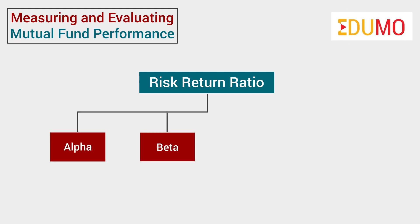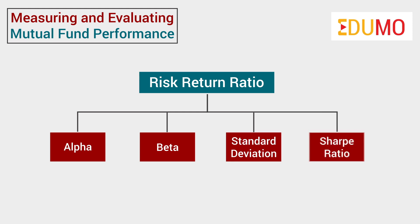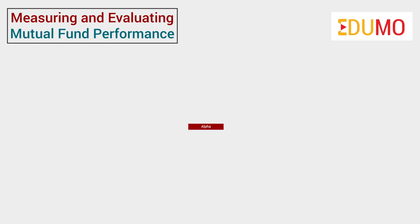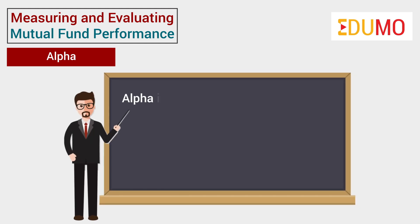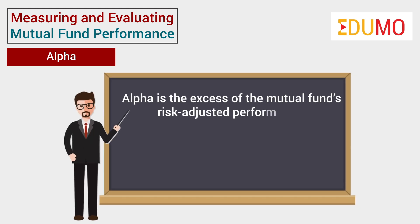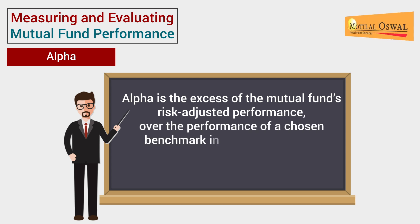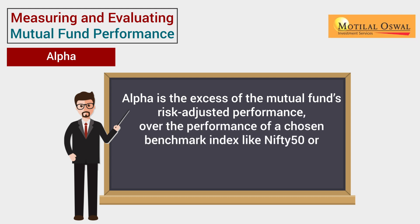Let us start with Alpha. In simple terms, Alpha is the excess of the mutual fund's risk-adjusted performance over the performance of a chosen benchmark index like Nifty 50 or Sensex.